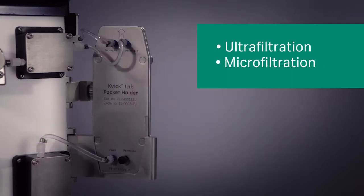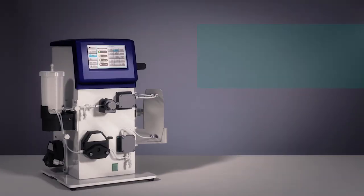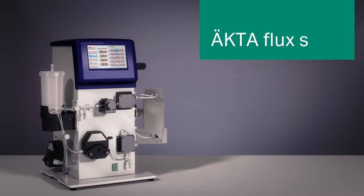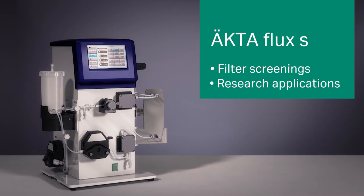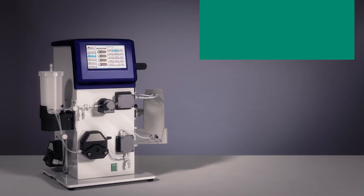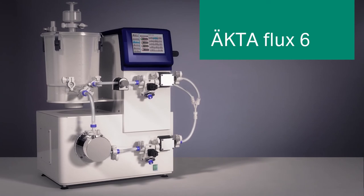Actiflux is available in two versions: Actiflux S with a reservoir volume of 0.5 liters, commonly used in filter screenings and research applications, and Actiflux 6 with a reservoir volume of 8 liters, suitable for use in process development and small scale production.